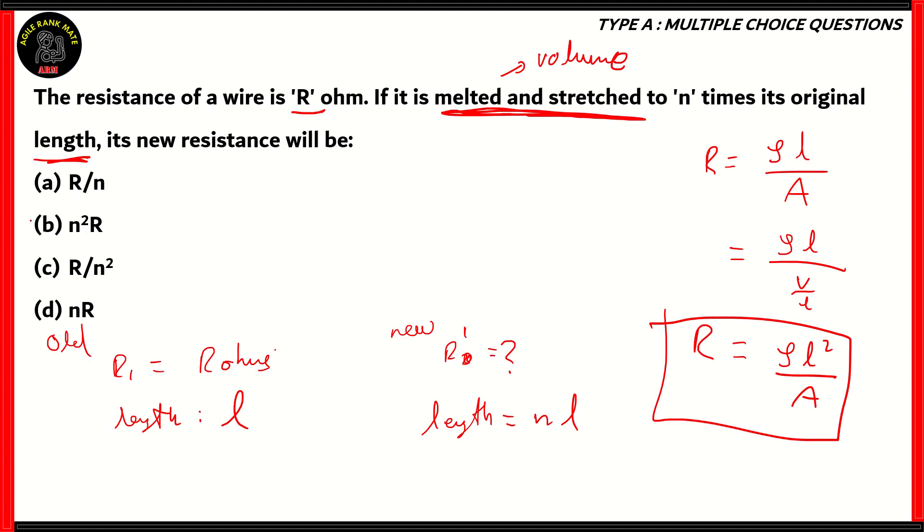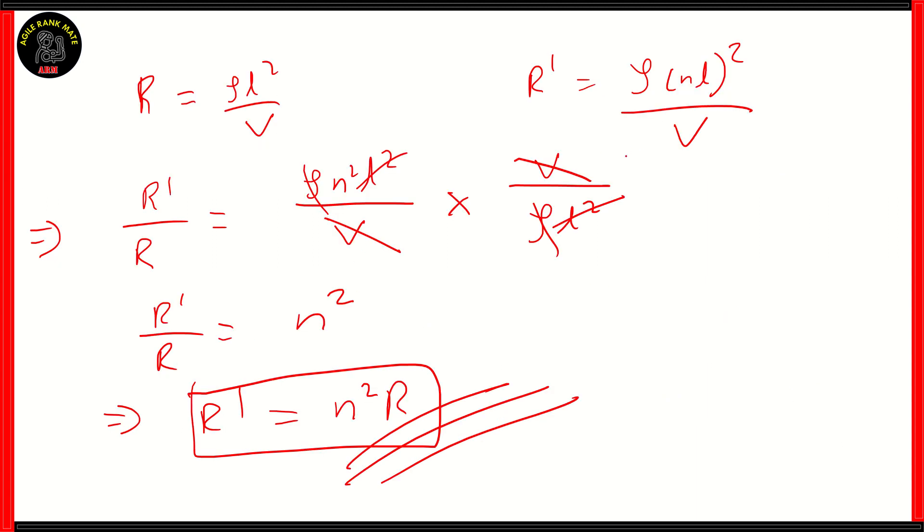If we look at the following options, it is clear that option B is the correct option. The reason being that we need to use the formula which expresses resistance in terms of length and volume, since we're melting and stretching the original wire. So, once we've done that, it's a good idea to compare the two resistances, and then we can get the value of the new resistance in terms of the original one, which is N²R.